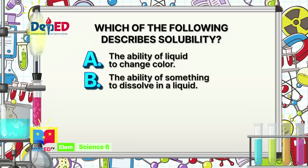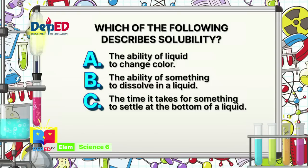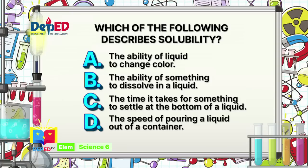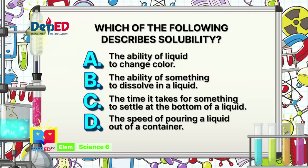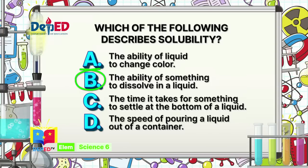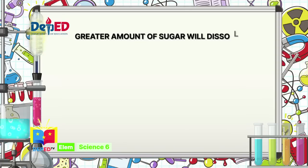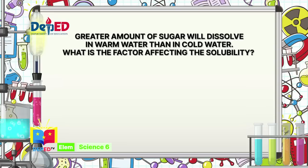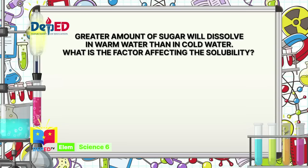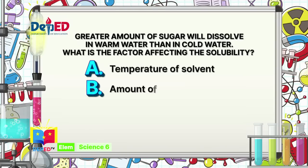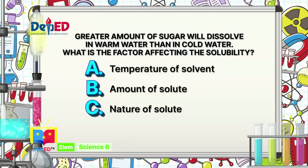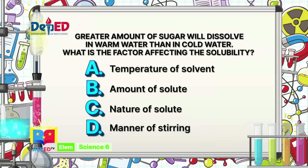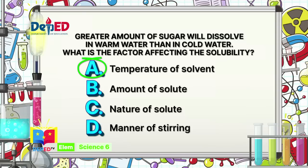Number 2: Which of the following describes solubility? A — The ability of liquid to change color. B — The ability of something to dissolve in a liquid. C — The time it takes for something to settle at the bottom of a liquid. Or D — The speed of pouring a liquid out of a container. The correct answer is B: The ability of something to dissolve in a liquid. Number 3: A greater amount of sugar will dissolve in warm water than in cold water. What is the factor affecting the solubility? A — Temperature of solvent. B — Amount of solute. C — Nature of solute. Or D — Manner of stirring. The correct answer is A: Temperature of solvent.